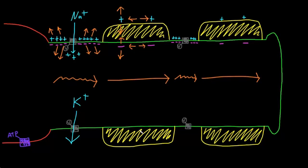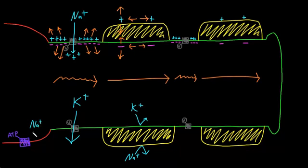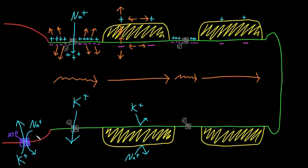Myelination also decreases the membrane permeability to ions, so that fewer ions in total cross the membrane during an action potential. Therefore, fewer ions in total need to recross the membrane after the action potential through the sodium-potassium pump, which pumps out all the sodium ions that came in through the voltage-gated sodium channels and pumps back in all the potassium ions that left. Since this process uses energy, myelination increases the efficiency of action potential conduction in terms of the energy needed to maintain ion concentrations after action potentials.